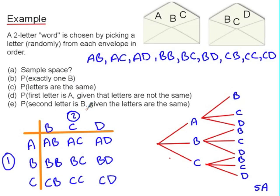What's the probability of achieving exactly one B? If we go through the list we've got AB. We don't want BB because that's two Bs. BC, BD, CB and that's it. So the probability of achieving exactly one B is four out of the nine outcomes.